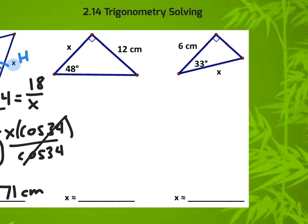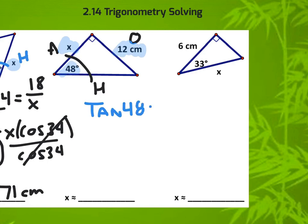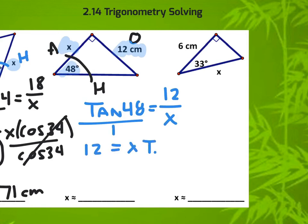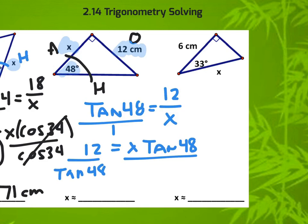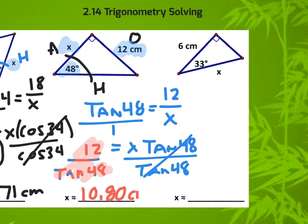Let's do one more. We do our labeling — adjacent and hypotenuse, and this is my opposite. The opposite, the adjacent, and the 48 degrees are all involved, so this is tangent because we're dealing with opposite over adjacent. When we cross-multiply, we get x times the tangent of 48, then divide both sides by the tangent of 48, leaving x on one side. Take 12 divided by the tangent of 48 and we get 10.80 centimeters.